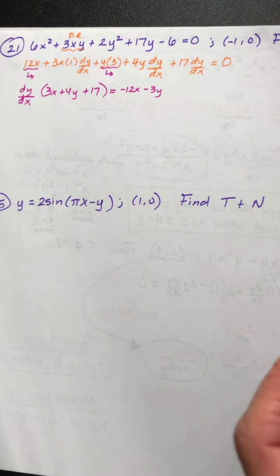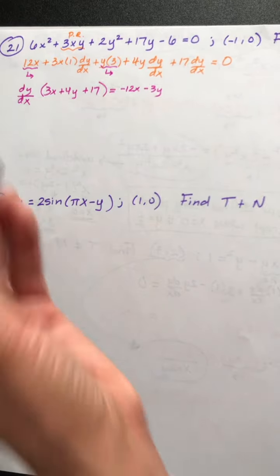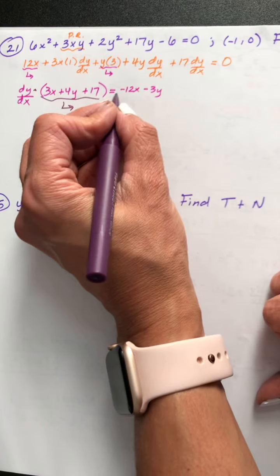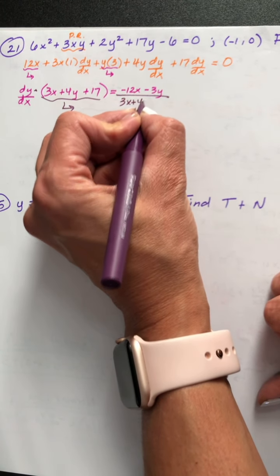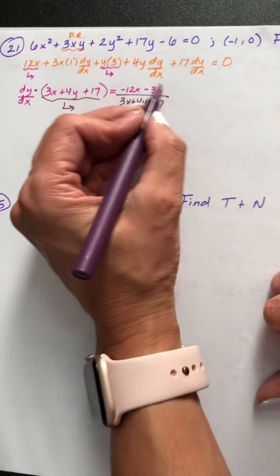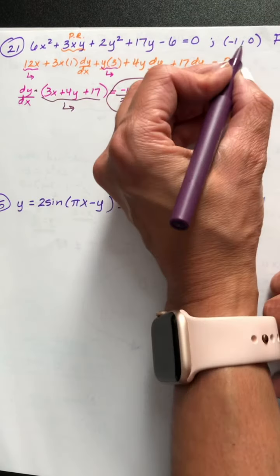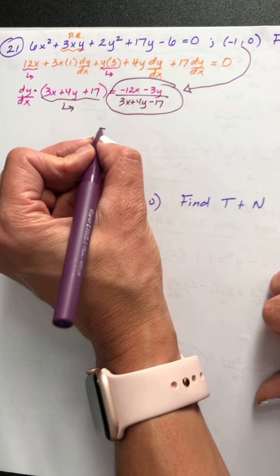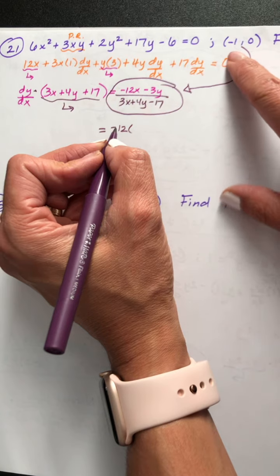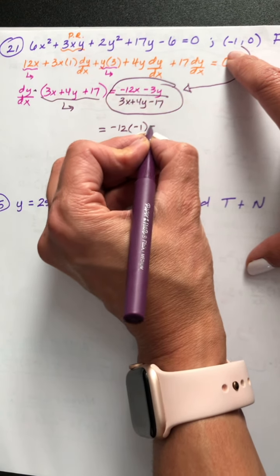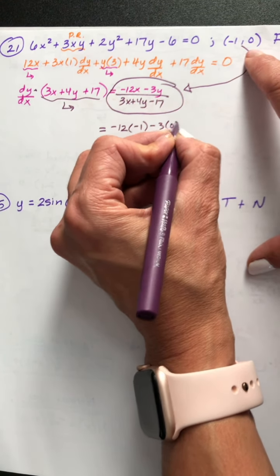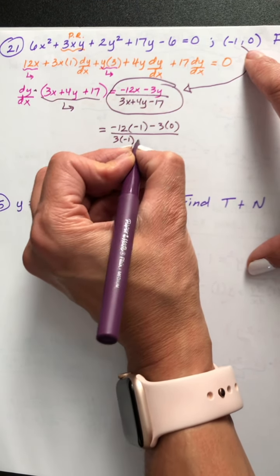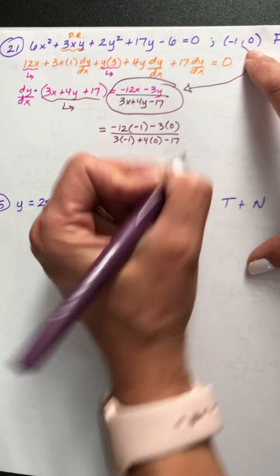Now we separate dy dx from the quantity 3x plus 4y plus 17. It's being multiplied times dy dx, so we divide it to get it to the other side. This is the slope formula. Plugging in the point: negative 12 times the x value negative 1, minus 3 times the y value 0, all over 3 times negative 1 plus 4 times 0 plus 17.